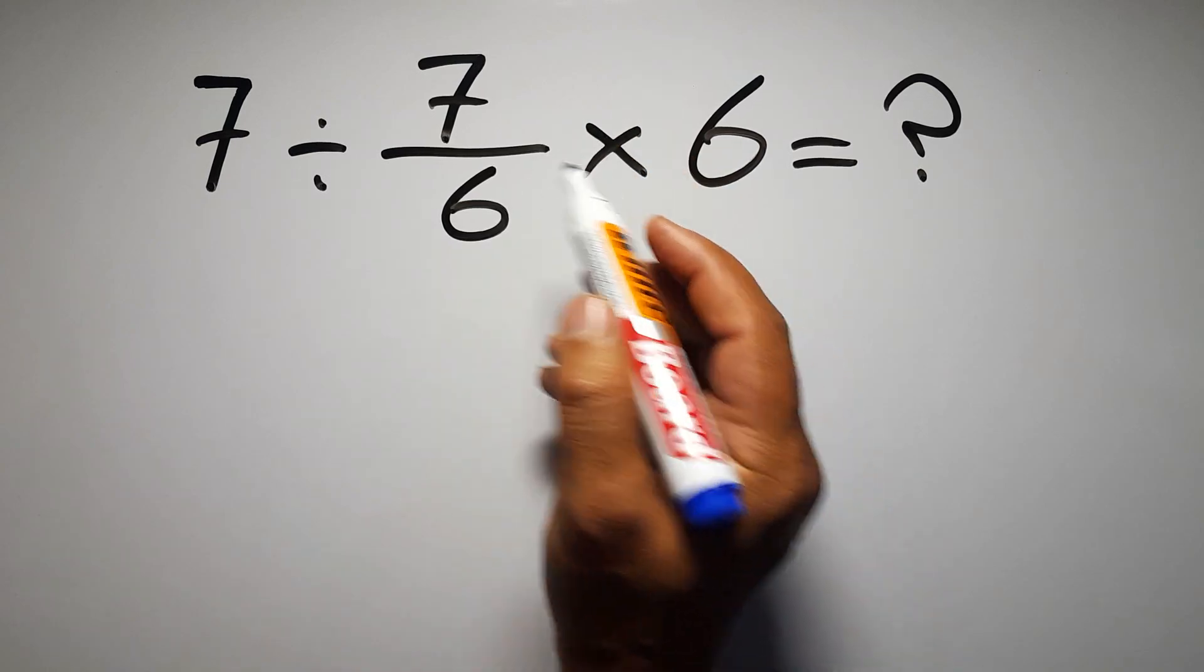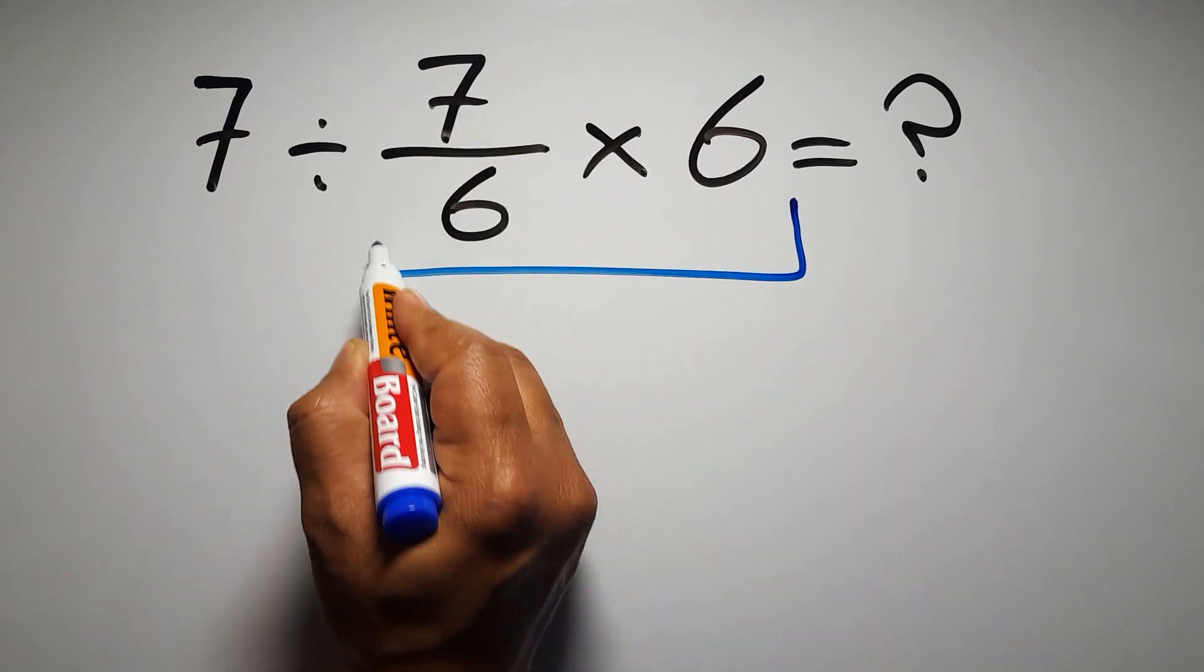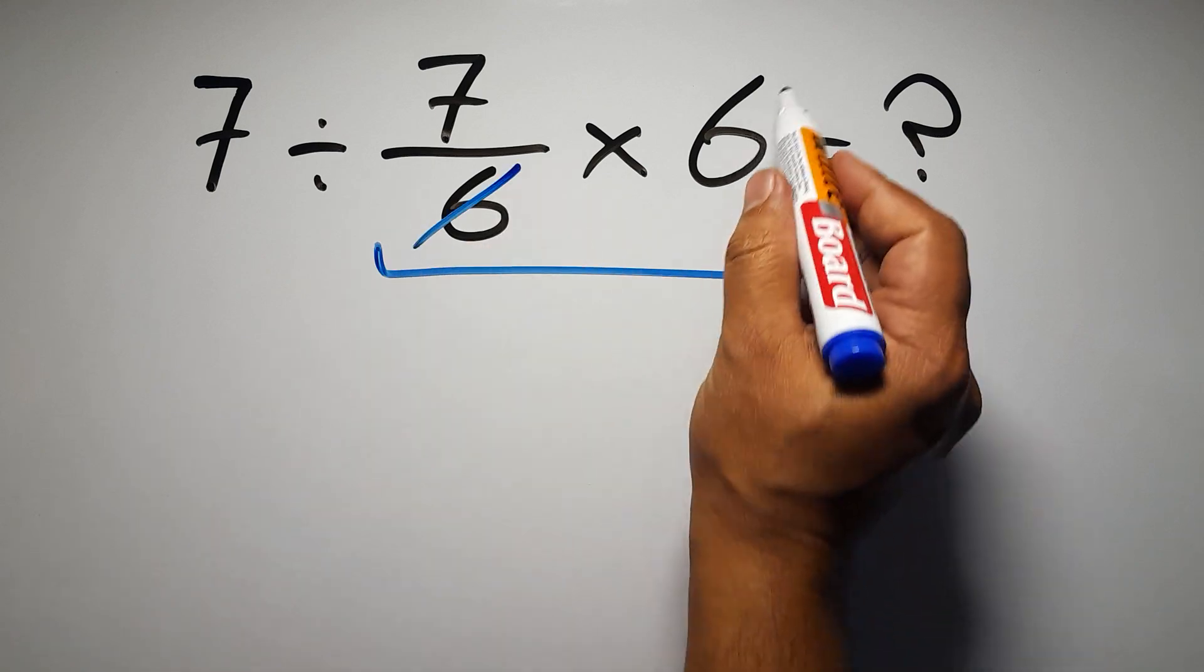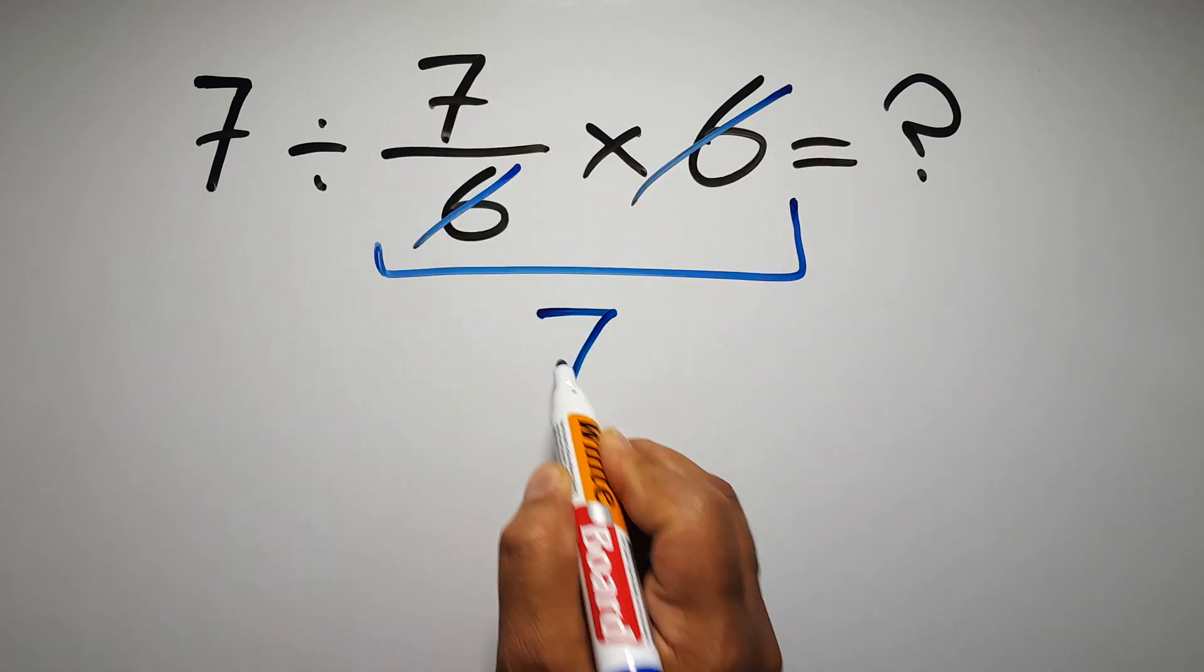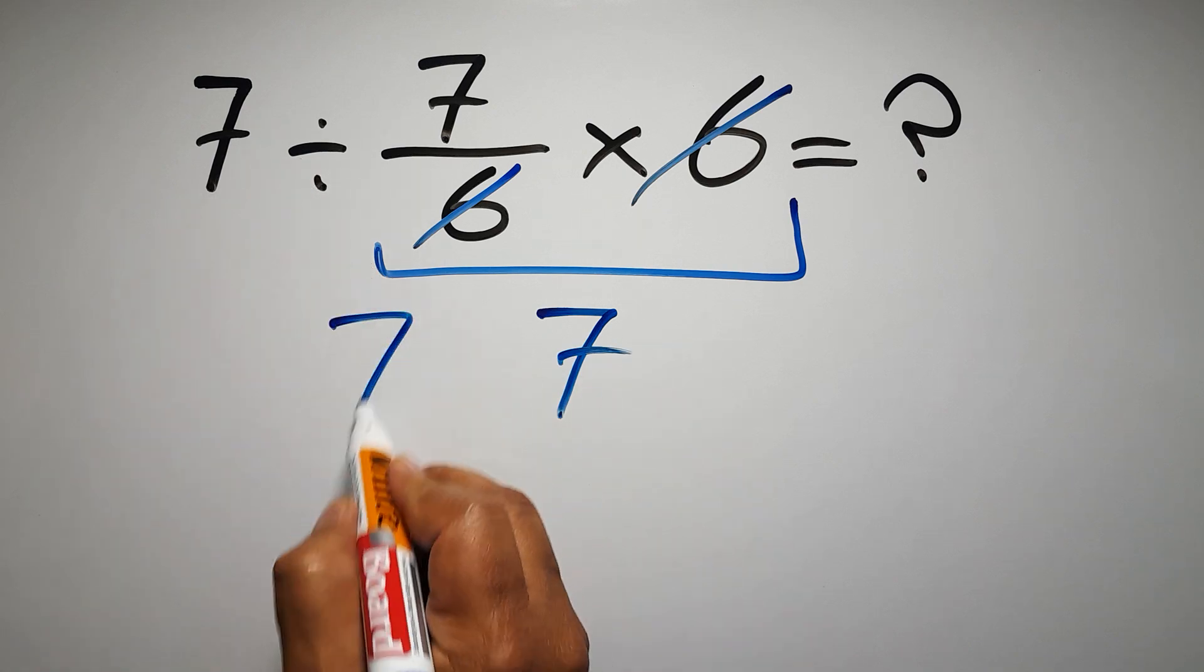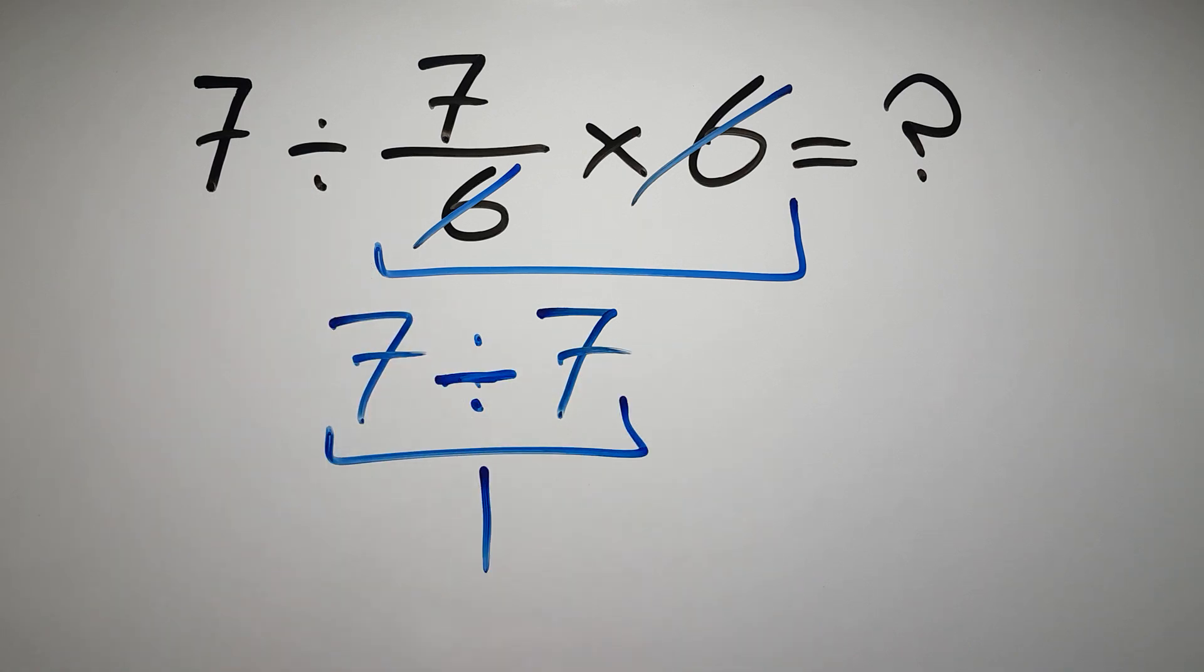First, we do this multiplication: 7 over 6 times 6. We can easily cancel this 6 and this 6, so we have just 7. And 7 divided by 7 gives us 1. But this answer is not correct because...